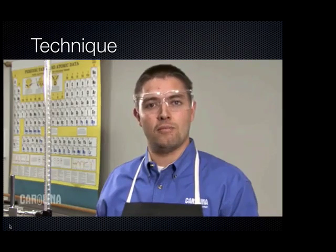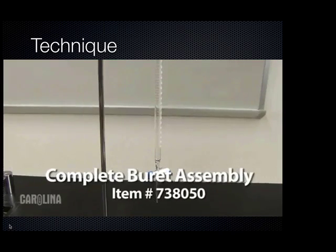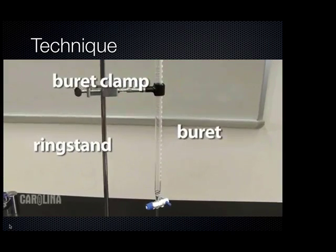Let's review some of the equipment that's needed for a titration. Carolina's complete burette assembly contains the basic equipment to get you started, including a burette, ring stand, and a burette clamp.